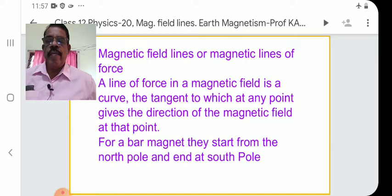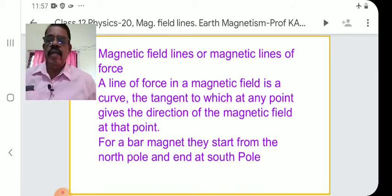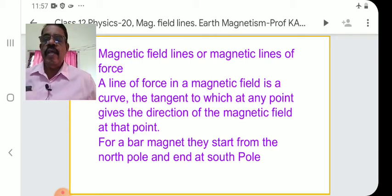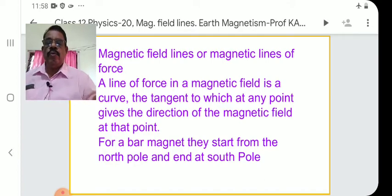For a bar magnet, the field lines start from the North Pole and end at the South Pole.